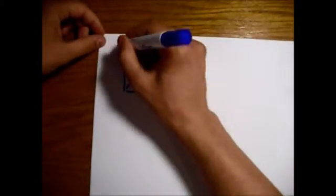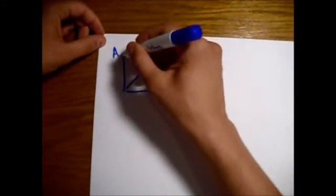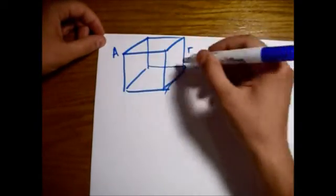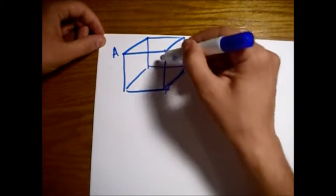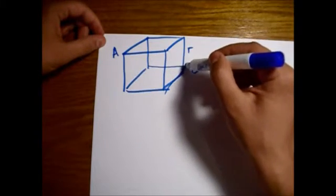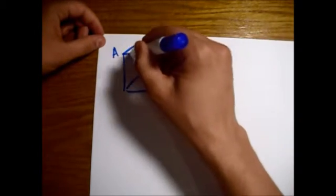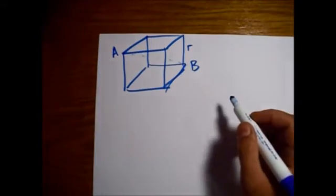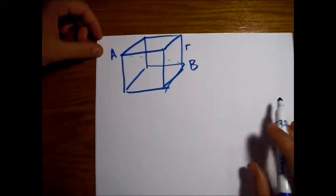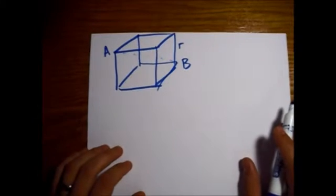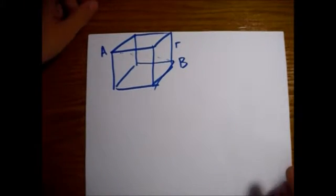And what we're finding is the resistance along a body diagonal of this cube, say, from this top front corner to the back bottom corner down here. Okay, so again, each of these wires has the same resistance, and so that's going to help us.